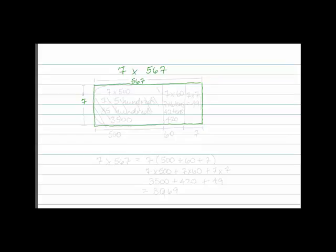So, this is not drawn to scale, but let's just imagine that the height of this rectangle, the width, is 7, and the length here is 567. So, if I multiply these together, I get the area of this rectangle.